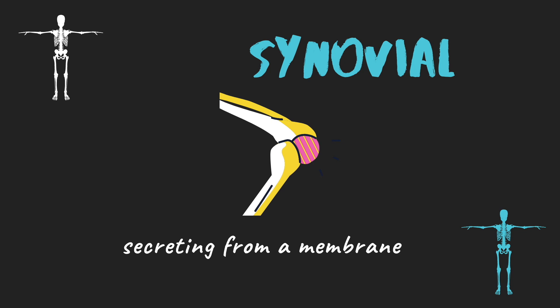Next we have 'synovial' — a word that is massively important within the skeletal system. You've got synovial joints, synovial fluid, synovial membrane, and synovial capsule. Whenever you see the word synovial, it's referring to a joint that secretes fluid from a membrane, because these are freely movable joints that need lubrication. Your cranium, as a fixed or fibrous joint, doesn't release synovial fluid because it's fused with no movement. But synovial joints need fluid to move freely — otherwise arthritis is around the corner.